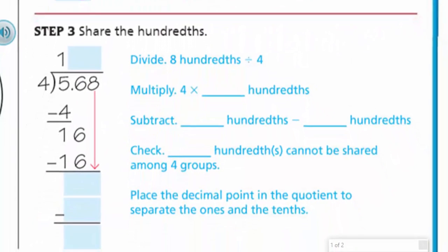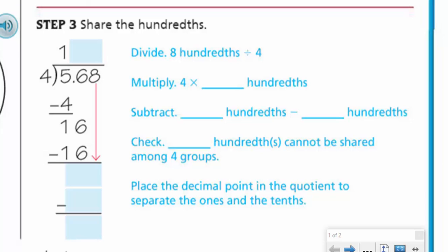Step three, share the hundreds. Okay. We're having to write. So this was zero here. Thank you. I'm dropping down my hundreds, which is eight. Oh, I still need my four up here again. Okay. Now divide eight hundredths. Okay. By four. Well, we can do that. Right. Two. Because four times two is eight. Like so. And then we end up with zero. We're going to subtract. We're subtracting eight hundreds by eight hundreds. Again, zero hundredths left over. Can't be shared.